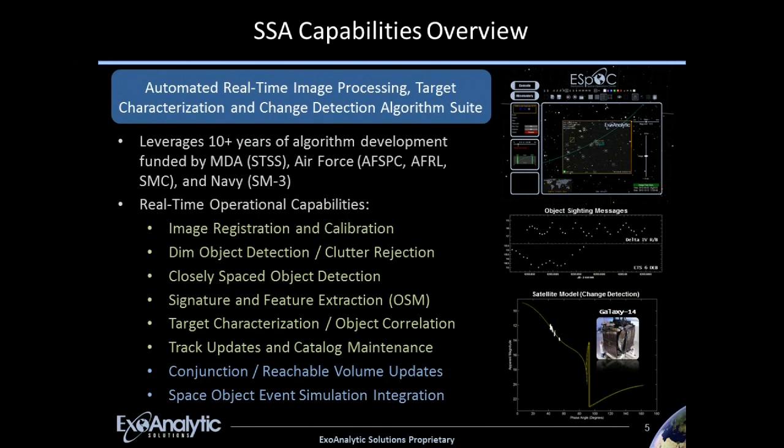All non-star sources of light are adjudicated with our dim object detection technology. With the 16-inch scope and about a 10-second integration time, we can get to 20th magnitude objects. Once that is done, we sort through all those pieces of light and use our closely spaced object detection algorithm to determine whether each non-star source is one or more objects. Our accuracy is such that if objects are separated by half a pixel or more, and one object is at least one-twentieth the brightness of the other, we can tell them apart and maintain separate tracks on both.